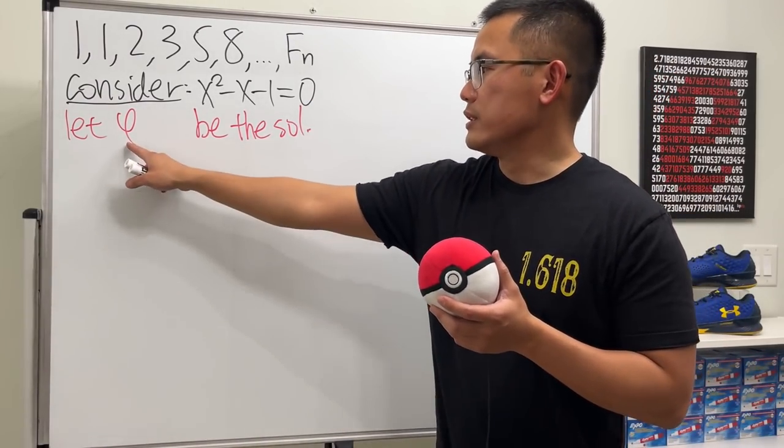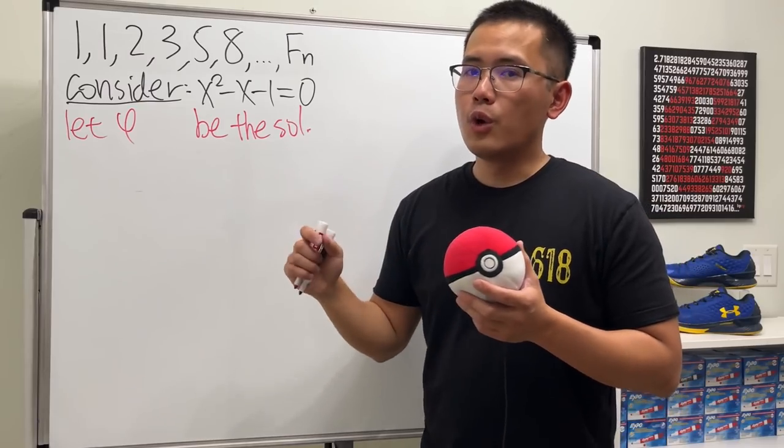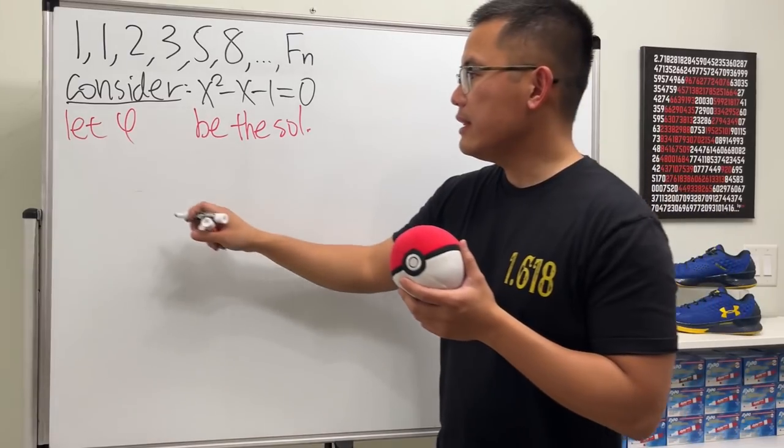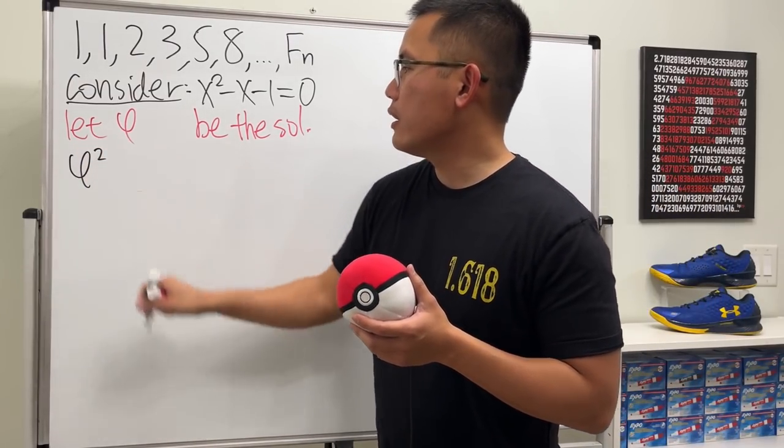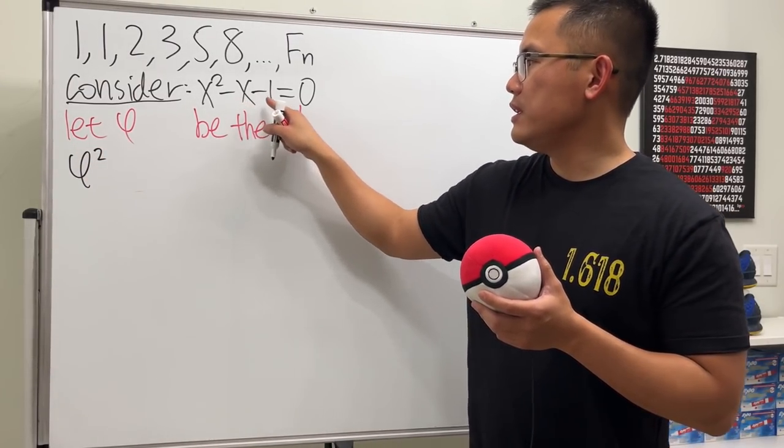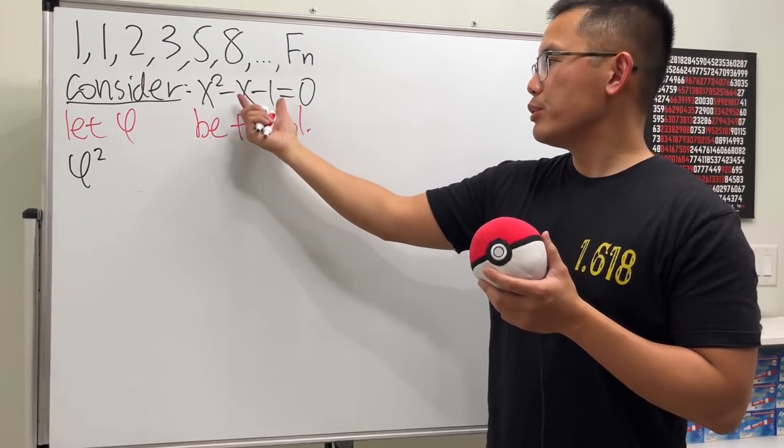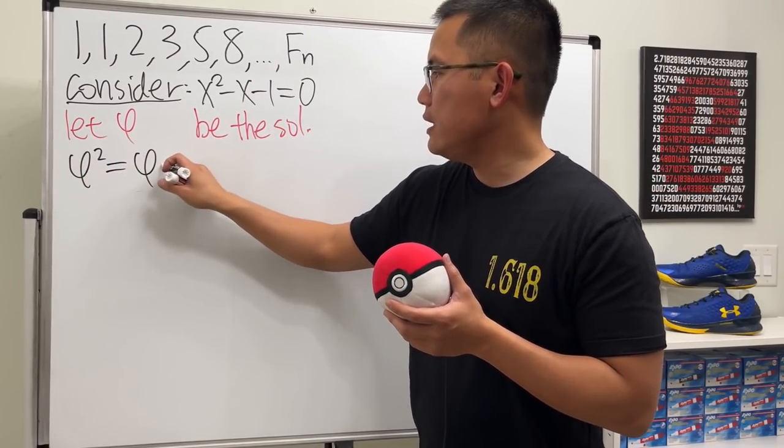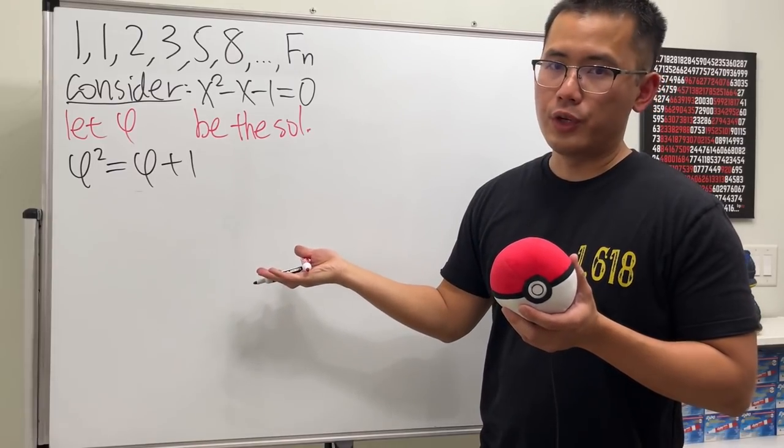And because we said that this is the solution for this equation, so we are allowed to just put this back here. And we will just end up with φ squared. It will be φ squared minus φ minus 1 equals 0. But let's put these two terms to the other side. So we get φ squared equals φ plus 1. Okay, pretty good.